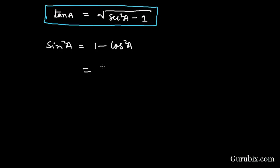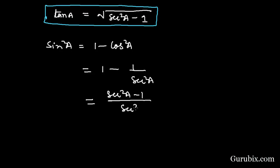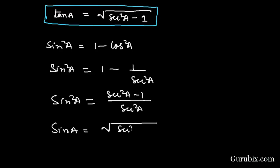We know that sin²A = 1 - cos²A, and we can write cos²A as 1/sec²A, so this equals (sec²A - 1)/sec²A. This means sin A = √(sec²A - 1) / sec A. This is how we can write sin A in terms of sec A.